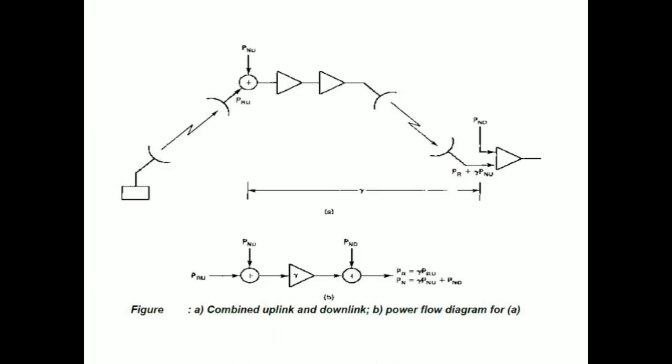This is a block diagram representation of the whole system. We have shown the gain of the system from satellite to the earth station — which includes the satellite system, the free space, and the receiving earth station — by a gain gamma. The signal PRU is received at the satellite and, because of the circuitry at the satellite, a noise PNU is introduced.